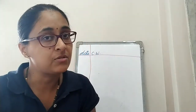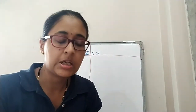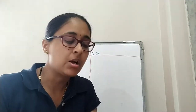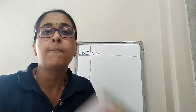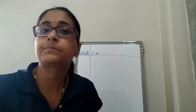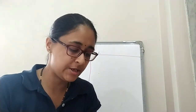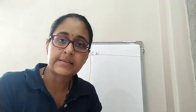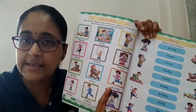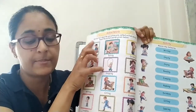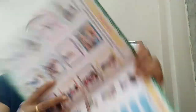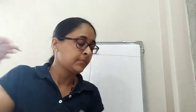तो आज हम लोग कुछ action words करेंगे. उसके लिए take out your popcorn book, page number 6. यहाँ पर आप अपना date और CW डाल लीजिए — ऊपर date और CW.